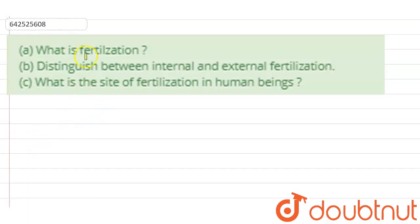There are three parts to this question. What is fertilization? The first question is what is fertilization. The B part of the same question asks us to distinguish between internal and external fertilization. And the C part asks us what is the site of fertilization in human beings. So for solving such a question, how can we start?